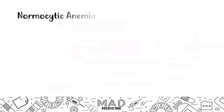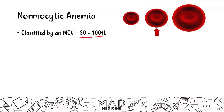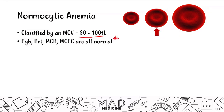Normocytic anemia is going to be classified based off of an MCV that is 80 to 100. Your hemoglobin, hematocrit, MCH, and MCHC can all be normal — this can vary, keep that in mind. You can have low hemoglobin, but it usually can also come up as normal. We are classifying this based off of the morphologic approach, and that specifically looks at the MCV values. MCV is the most important thing.